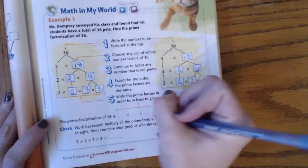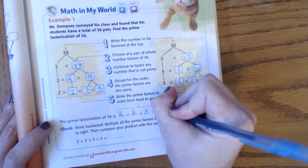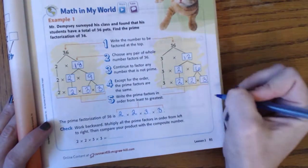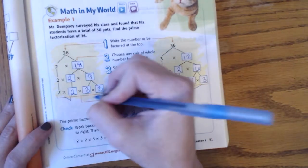So 36 is going to be 2 times 2 times 3 times 3. And if you see here that there are 2 2's and 2 3's in each of these examples.